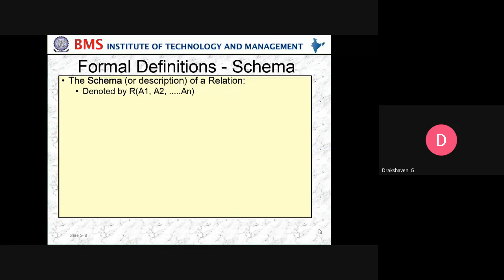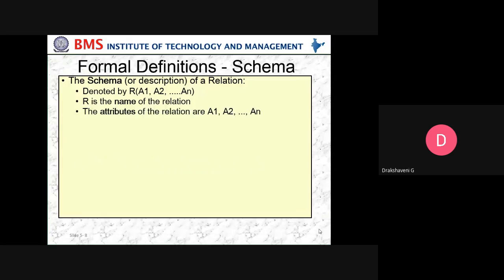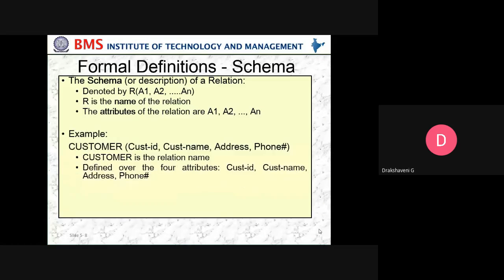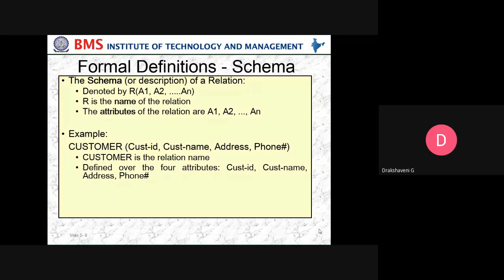A schema or description of a relation is denoted by R(A1, A2, ..., An), where R is the name of the relation and A1, A2, etc. are the attributes. For example, the relational schema for Customer has Customer as the relation name and Customer_ID, Customer_Name, Address, and Phone_Number as the columns. Customer is a relation defined over four attributes: Customer_ID, Customer_Name, Address, and Phone_Number.